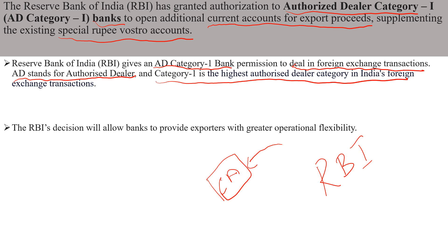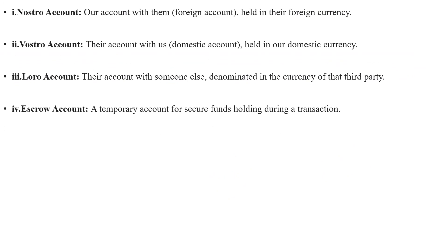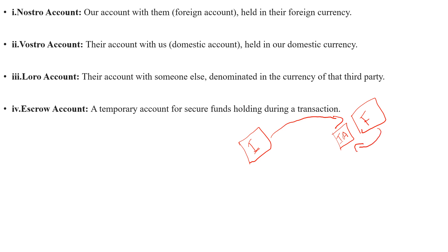Now we will see what is Nostro, Vostro, and Loro. For Nostro account, consider two banks: an Indian bank and a foreign bank. If the Indian bank is having an account in the foreign bank, and that account is denominated in the foreign bank's currency — for example, if the foreign bank is in the USA, the currency will be in US dollars — this is called a Nostro account. So our Indian bank holds an account in a foreign bank in that foreign country's currency.